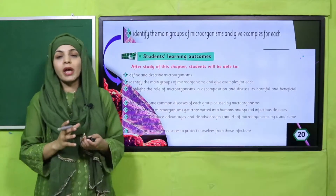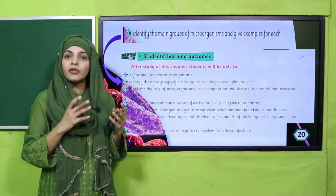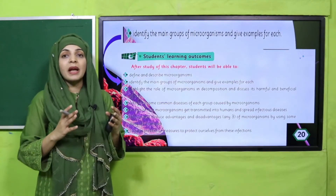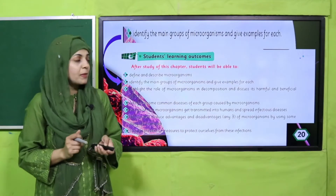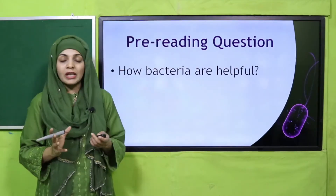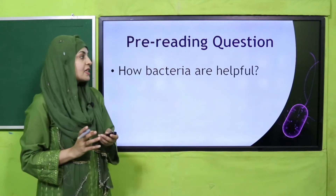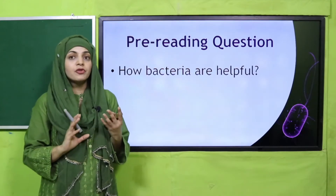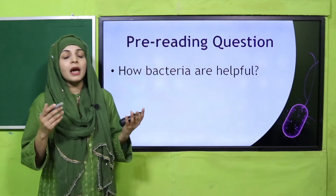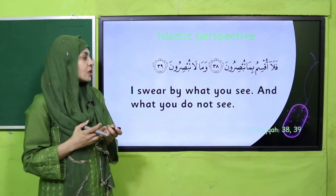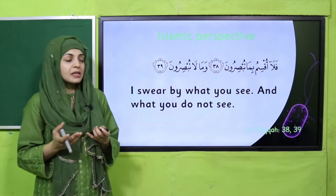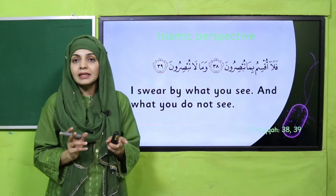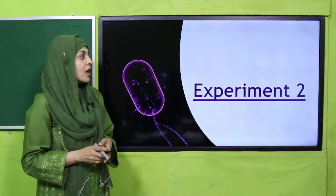Today, students will be able to identify the main groups of microorganisms and give an example for each. We have already identified virus and bacteria one by one. Today we will perform an experiment related to bacteria. Bacteria do not only cause diseases — they are also very helpful for us. From the Islamic perspective: I swear by what you see and what you do not see. Microorganisms are things we cannot see, but they still exist in nature.